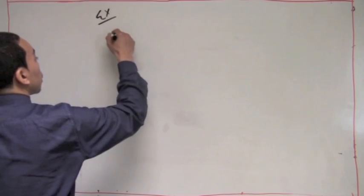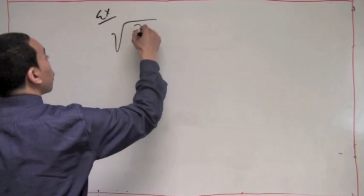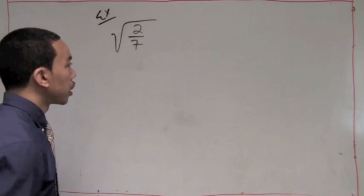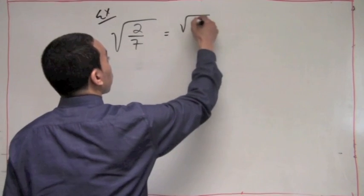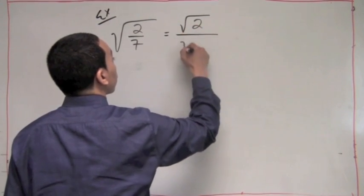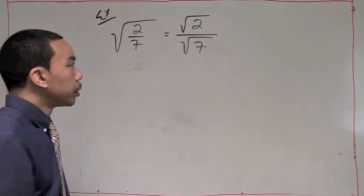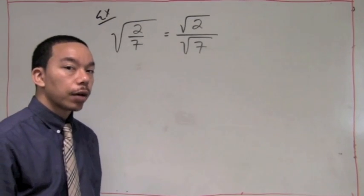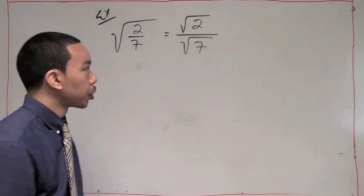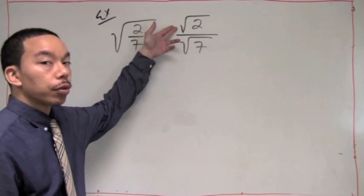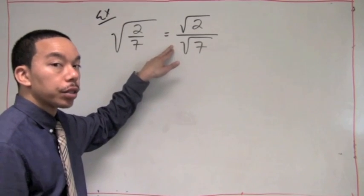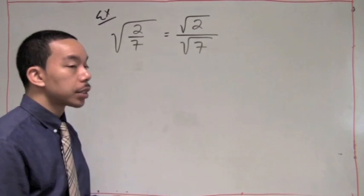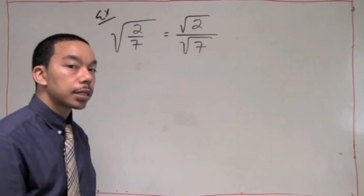If we have an example that says square root of 2 over 7, the quotient property that we've already covered says we can rewrite this as the square root of 2 over the square root of 7. Now with radicals, it's considered not simplified if you have a radical in the denominator of a fraction. It's perfectly fine to have a radical in the numerator, but we cannot have a radical in the denominator. Any time we have a radical in the denominator of a fraction, we have to say it is not simplified. So we must take steps to simplify.